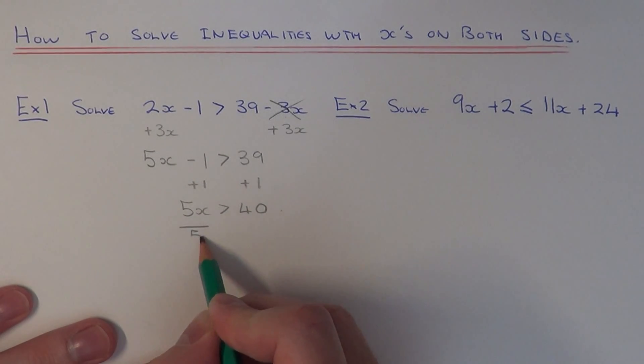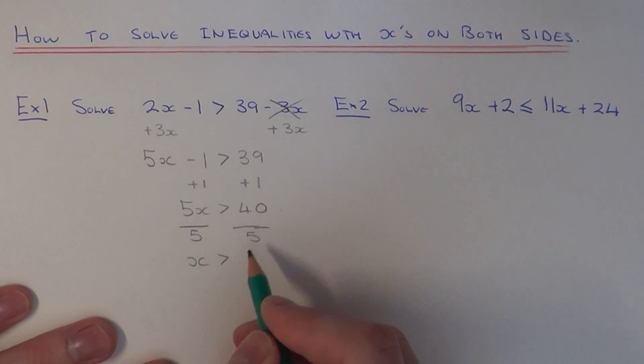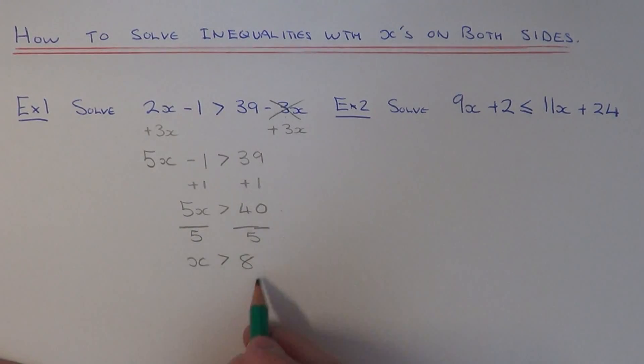And then x is now being multiplied by 5, so if we do the opposite, which is to divide by 5, we get a final answer of x is more than 8. And this is the answer you'd write on the answer line. Whatever you do, don't change the more than sign back to an equal sign.